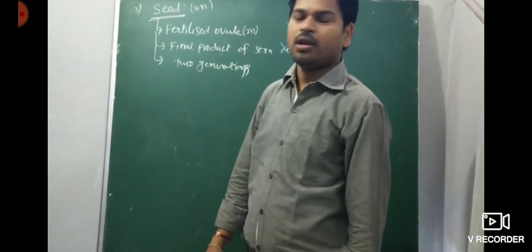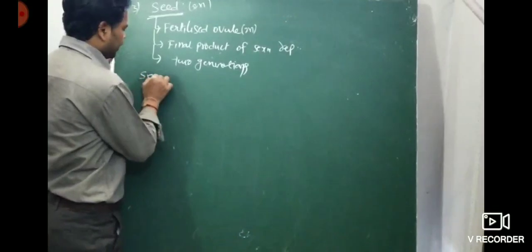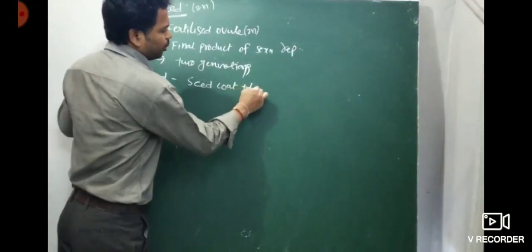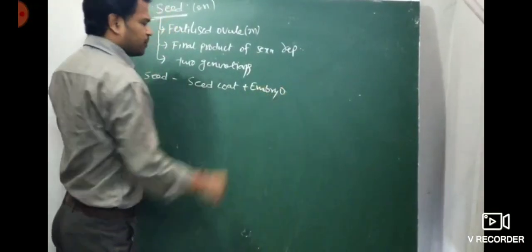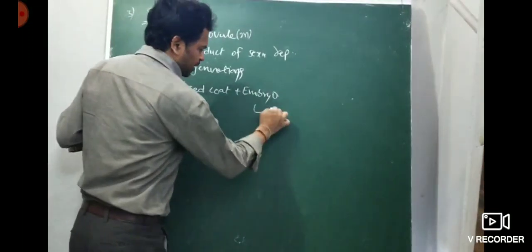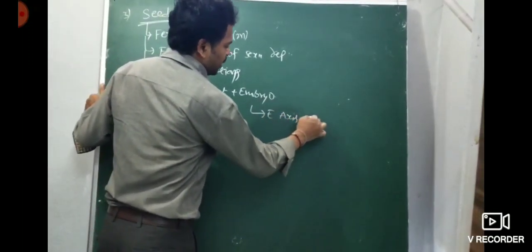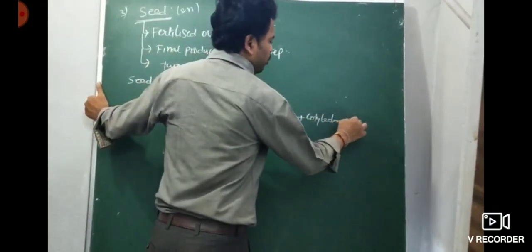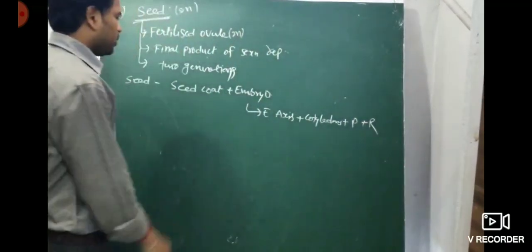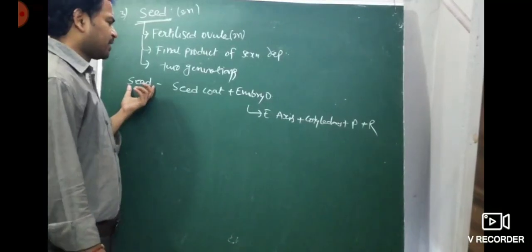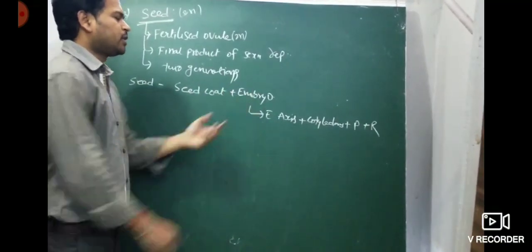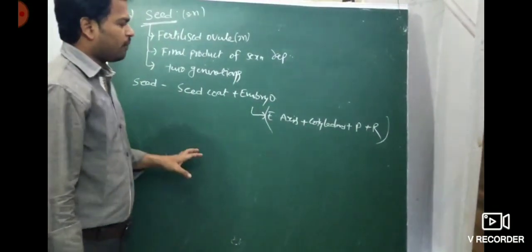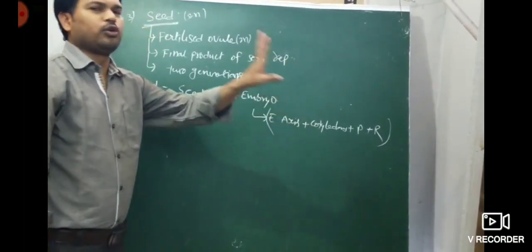Generally, seed consists of seed coat and embryo. The embryo consists of embryonal axis, cotyledons, plumule, and radicle. Dicot embryo consists of embryonal axis, two cotyledons, plumule, and radicle. Note: seed coat is part of the seed, not part of the embryo itself.